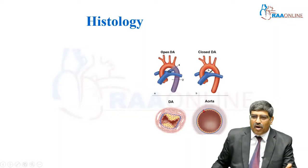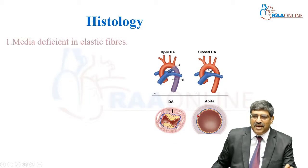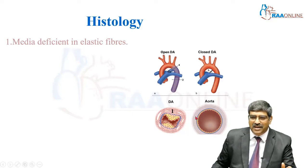This is the normal aortic lumen and this is the PDA lumen. Here you can see the elastic fiber. The elastic fiber is deficient here, but in normal aorta, you can see the elastic fibers arranged neatly.